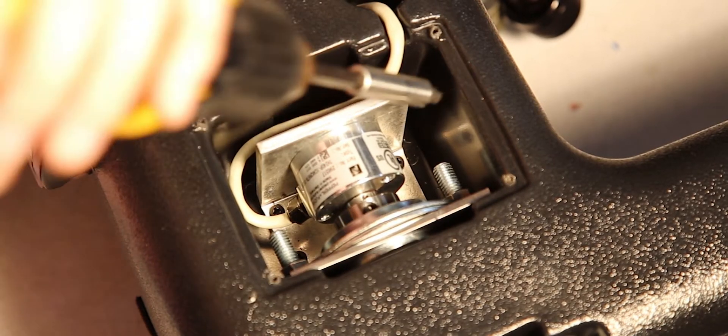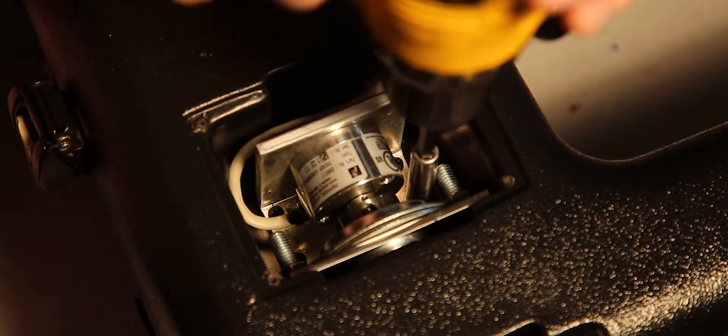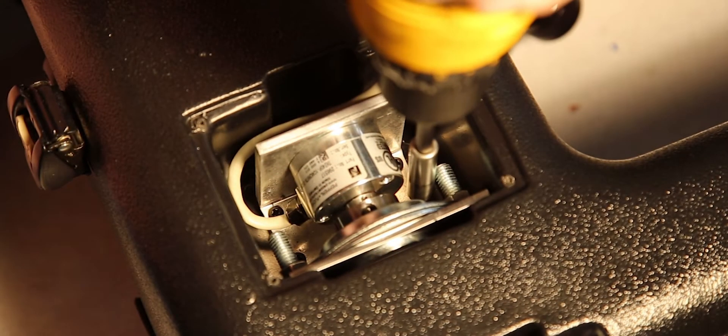Using a hand drill or number 2 Phillips screwdriver, remove the four screws fastening the encoder plate to the base of the encoder cavity.